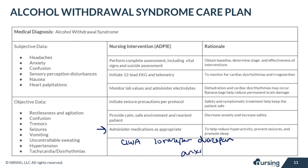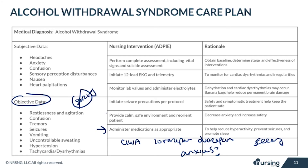Some example CIWA questions include: do you feel anxious, and if so, how would you rate your anxiety from zero to ten? Are you seeing, hearing, or feeling anything unusual? Do you feel restless? Other parts of the CIWA are more objective — how badly are they sweating or shaking, are their vital signs off the charts with high blood pressure or high heart rate? The medications we use will help reduce hyperactivity, prevent seizures, promote sleep, and decrease blood pressure and heart rate.